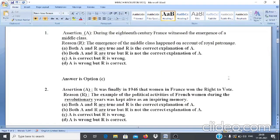Question 1. Assertion A: During the 18th century, France witnessed the emergence of a middle class. Reason R: The emergence of a middle class happened on account of royal patronage. Here assertion A is correct but reason R is wrong. So answer is option C.